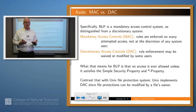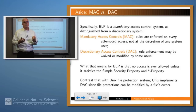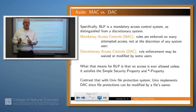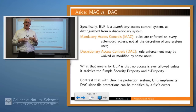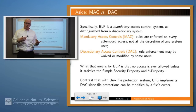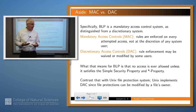For example, if you think about Unix file protection, the owner of a file can change the protection — the access rights on that file — for himself, group, or world. And so that's a discretionary policy in the sense that somebody is allowed to change that on the fly.